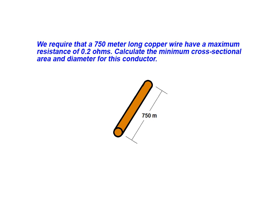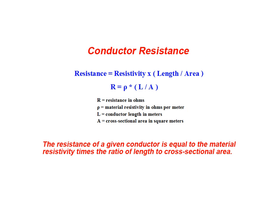To solve this problem, we will use the general relationship for calculating conductor resistance. As can be seen here, the resistance of a given conductor is equal to the material resistivity times the ratio of its length to its cross-sectional area.